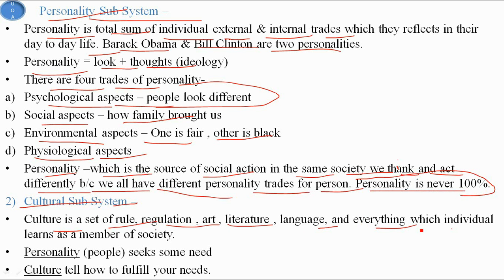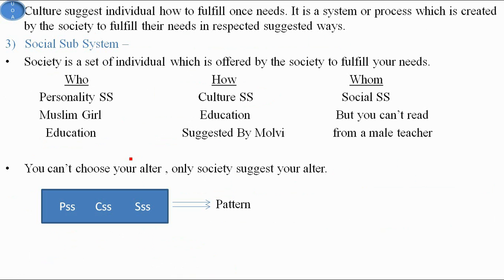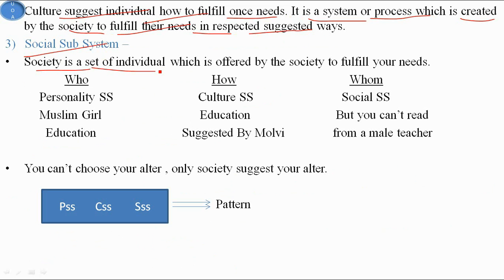The cultural subsystem is a set of rules, regulations, art, literature, language, and everything which an individual learns as a member of society. Personality means people always seek some needs, and culture tells us how to fulfill those needs. Culture suggests to individuals how to fulfill one's needs — it is a system created by society to fulfill their needs in suggested ways.